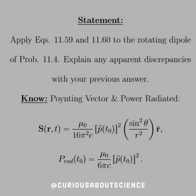What were equations 59 and 60? Those were the Poynting vector and power radiated. Following along, we see the Poynting vector time-averaged gives mu naught over 16 pi squared C, times the double time derivative of the electric dipole evaluated at T naught squared, times sine squared theta over R squared in the R-hat direction. For the power radiated, once we time-average and carry out the integral, we get mu naught over 6 pi C times P double-dot of T naught squared.